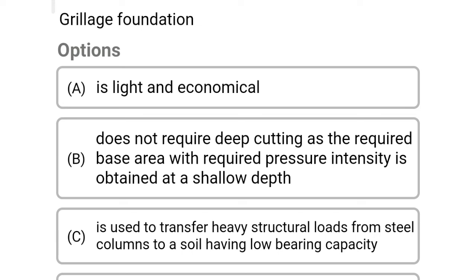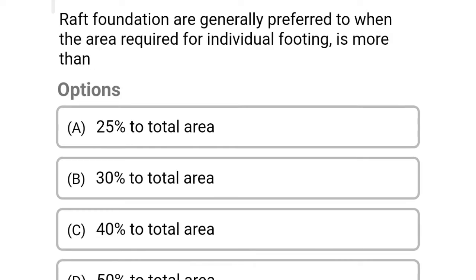Next question: grillage foundation — Option A: is light and economical. Option B: does not require deep cutting as the required base area with required pressure intensity is obtained at shallow depth. Option C: is used to transfer heavy structural loads from steel columns to soil having low bearing capacity. Option D: all of the above. The correct answer is Option C.